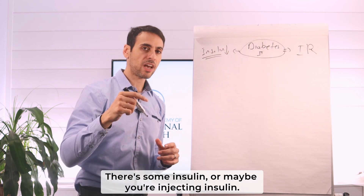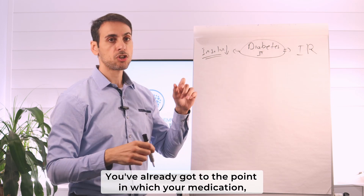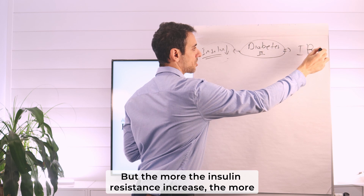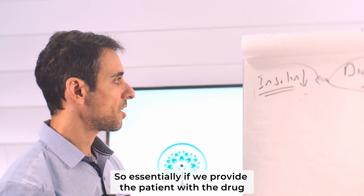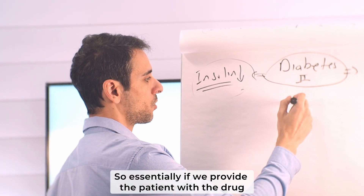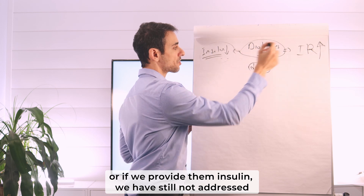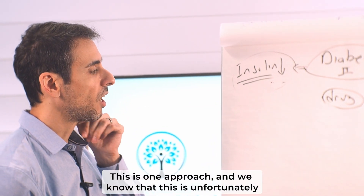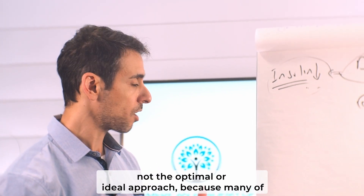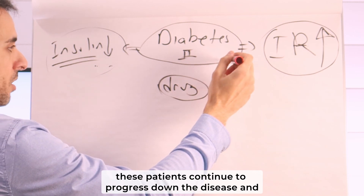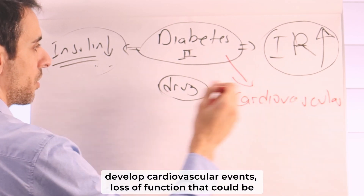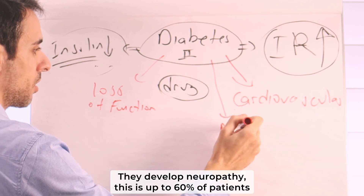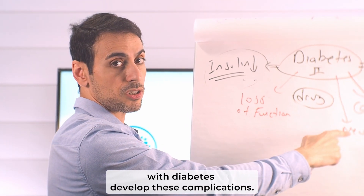There is some insulin, or maybe you're injecting insulin — you've already gotten to the point where metformin is not enough. So you're now injecting insulin, but the more insulin resistance increases, the more insulin is needed. If we just provide the drug or insulin, we have still not addressed the problem, which is the insulin resistance. Unfortunately, many of these patients continue to progress and develop cardiovascular events, loss of function in the liver, kidney, or eyesight, and they develop neuropathy — this affects up to 60% of patients with diabetes.